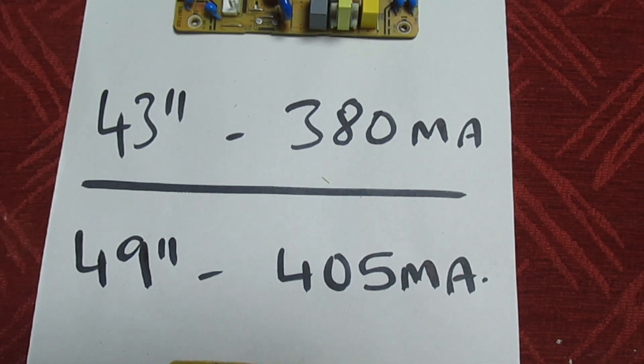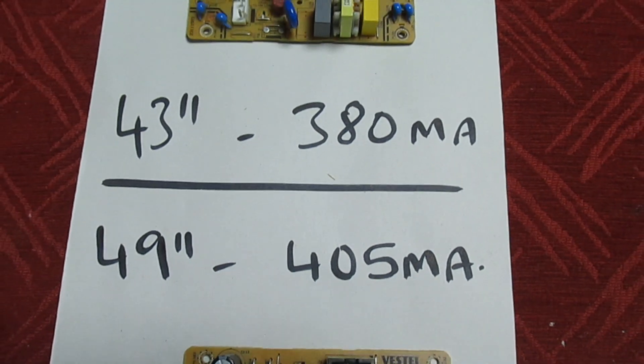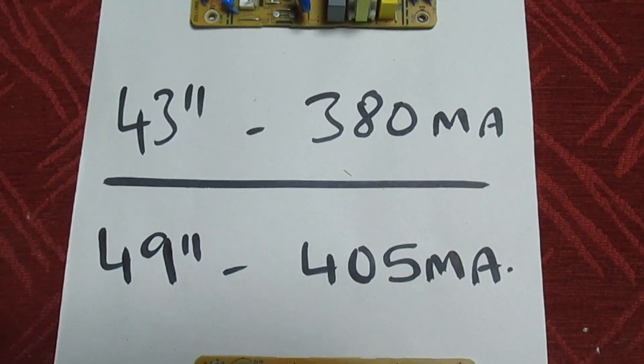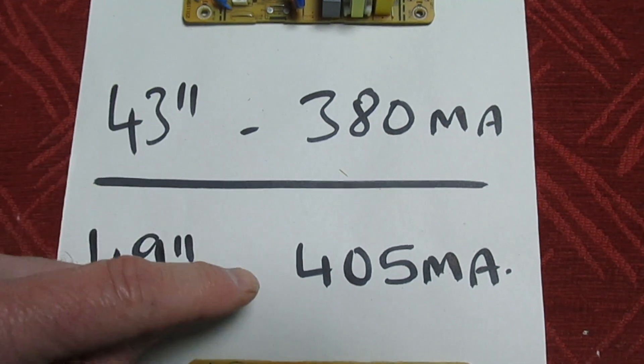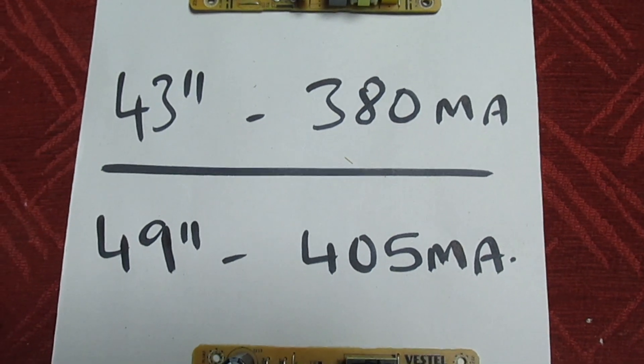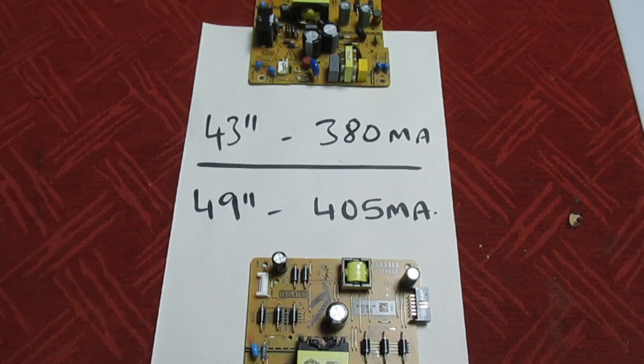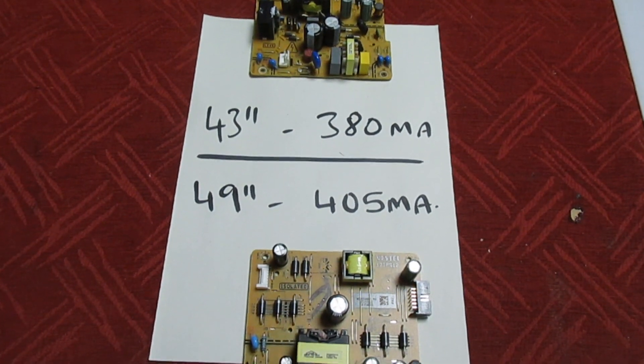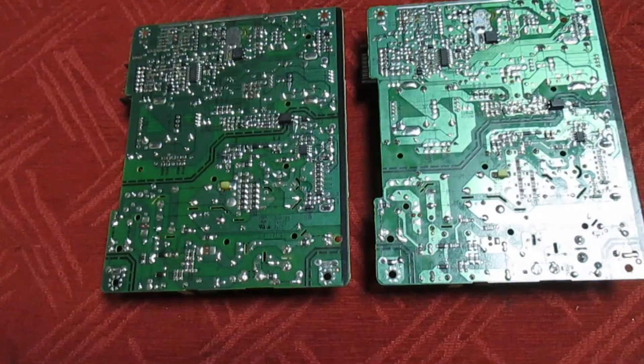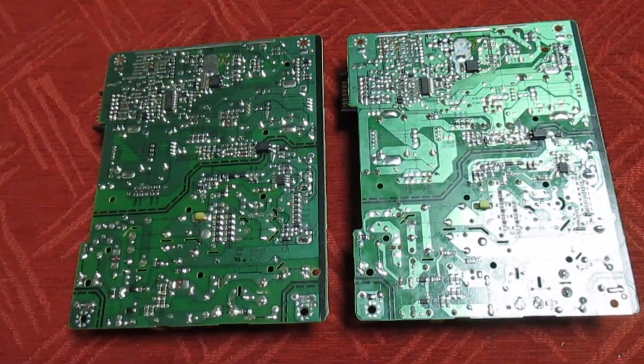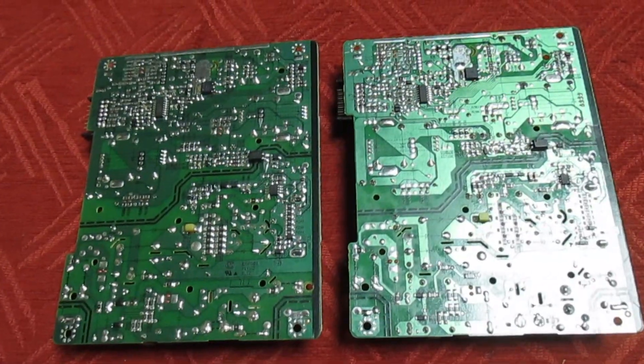So you see, although they would interchange, if you get the wrong one you're either going to be running the LEDs at too low a current or you're going to be running the LEDs at too high a current depending on which way round you get it. So what's the difference in these two power supplies? Well let's turn them over and have a quick look. So if we look at the back of the boards, they look the same as well.